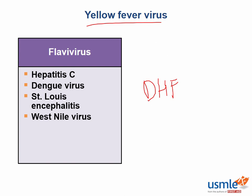The West Nile virus is another mosquito-borne flavivirus that typically causes a very mild flu-like disease in immunocompetent hosts. However, in immunocompromised people or in the elderly, it can cause a very life-threatening neurologic disease such as meningoencephalitis.